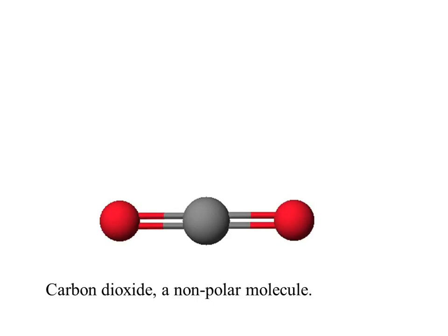We already did this slide, but I said in order to understand if there's a hot spot in a molecule, you've got to understand its Lewis structure. Hopefully you can take those three atoms — two oxygens and one carbon — and knock out that Lewis structure. Both the central carbon and the terminal oxygens all have a complete octet with that.